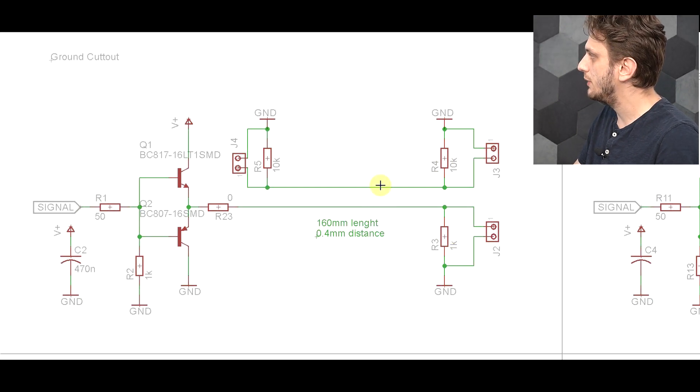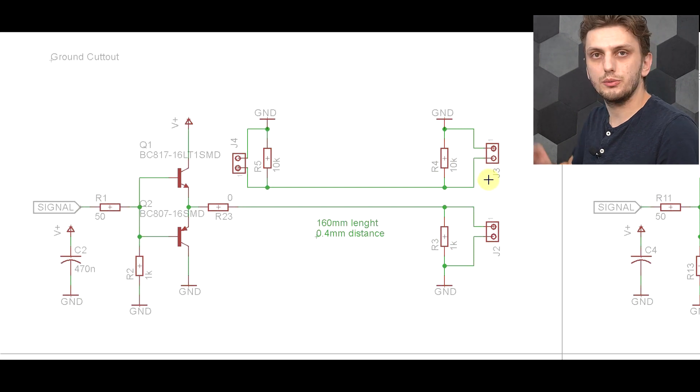And then right next to it, I have another line, which is terminated with 10 kilo-ohm resistors on both sides. And basically, there's no physical connection in between the two lines, there's only 160 millimeters of length of wire, separated by 0.4 millimeters. So we shouldn't see absolutely anything in the second line. But let's see what happens.